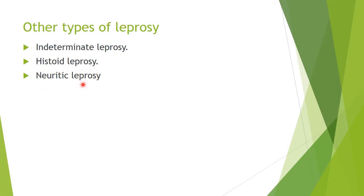Other types of leprosy include indeterminate leprosy, histoid leprosy, and neuritic leprosy. Neuritic leprosy is very common in India, accounting for 10% of leprosy presentations. There are no skin lesions — only the nerve is involved, with thickened tender nerves and no skin involvement.